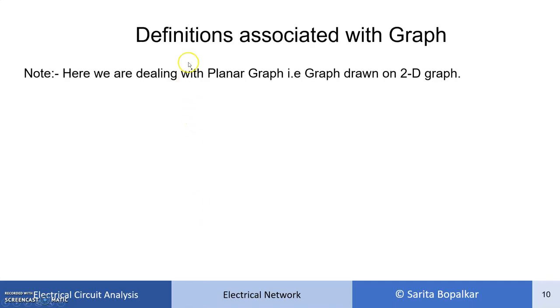So, some definitions associated with graph theory. First, note that all these definitions are related to the planar graph. A planar graph means it is a two-dimensional graph.